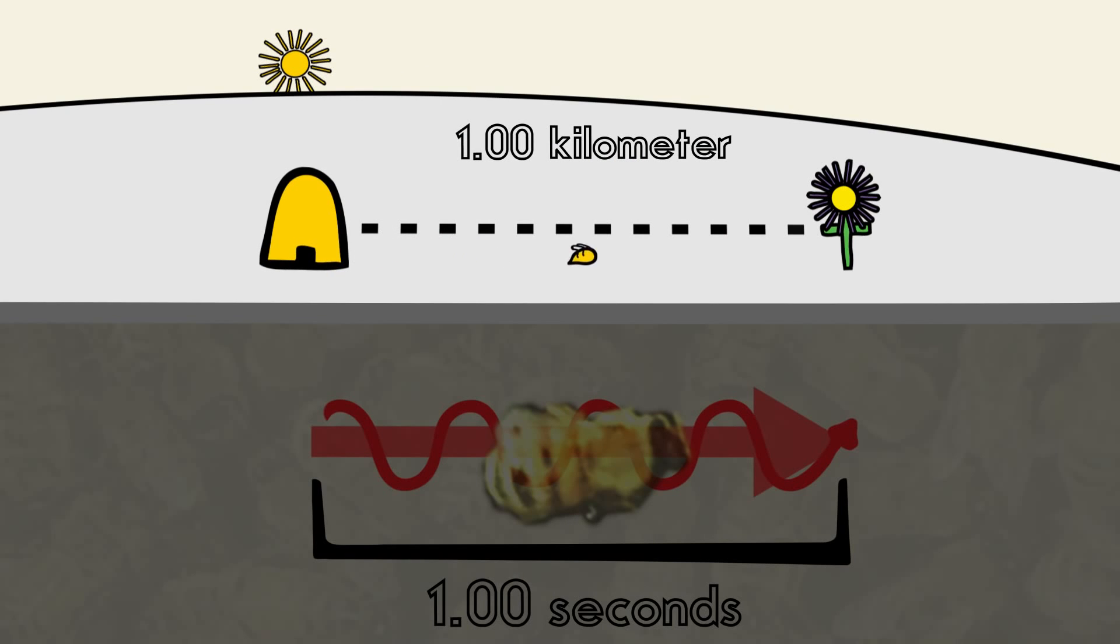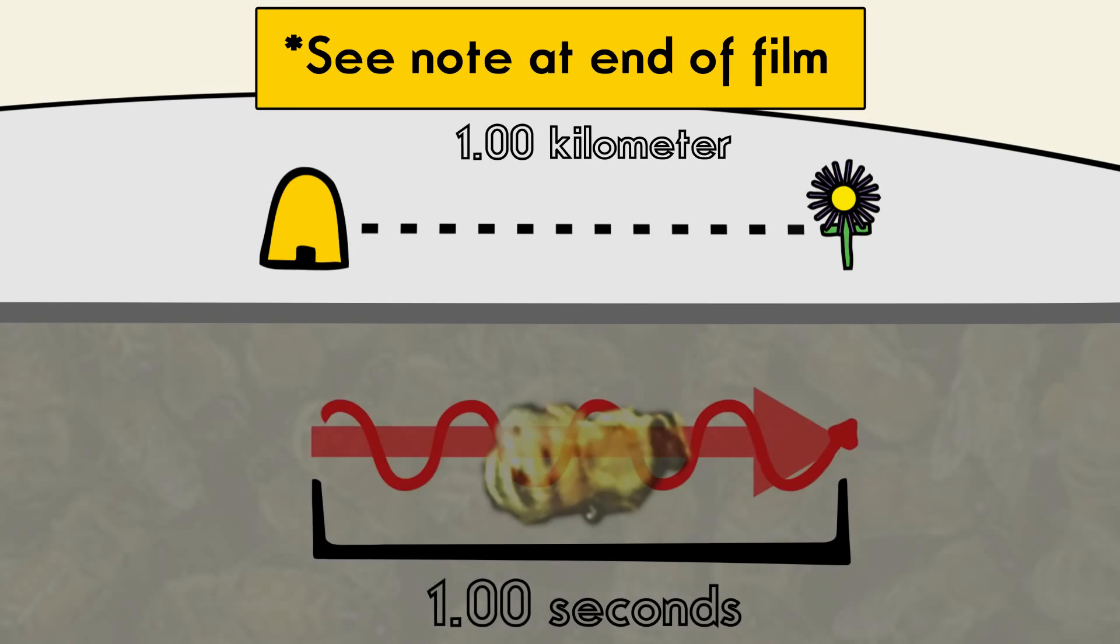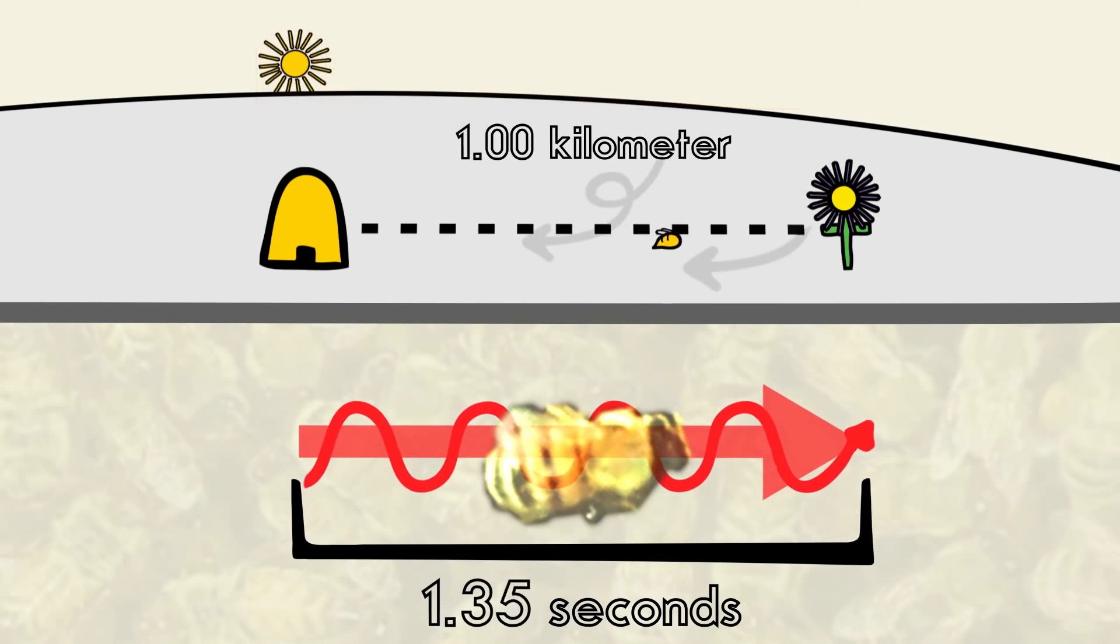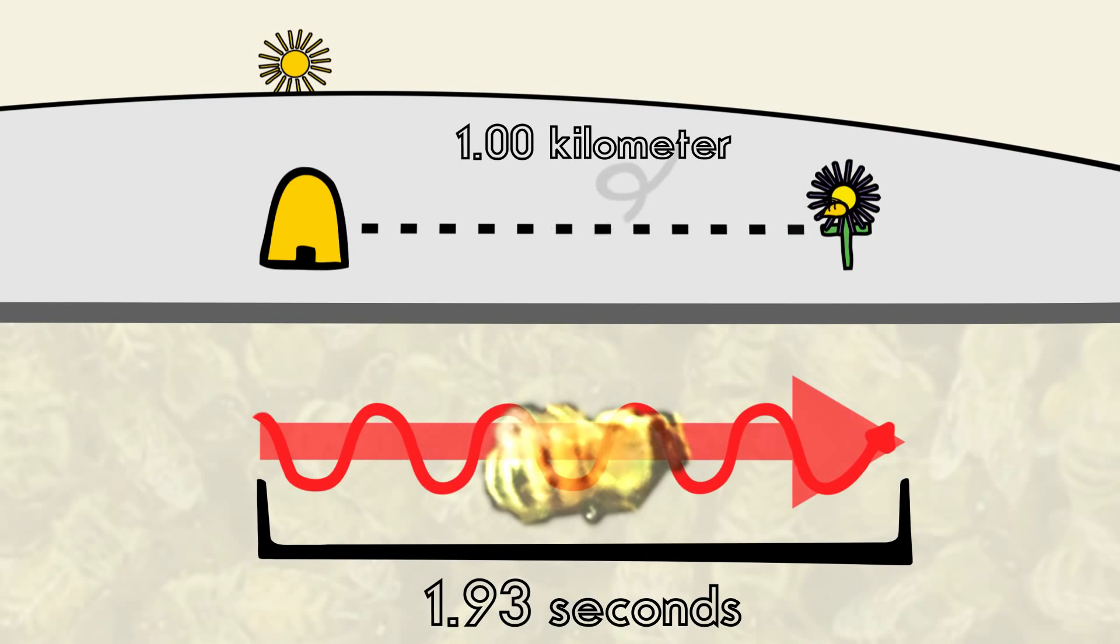For bees, distance is actually measured by the amount of energy it takes them to travel. Thus, a strong headwind could cause a bee to dance as if the food came from a further distance away.